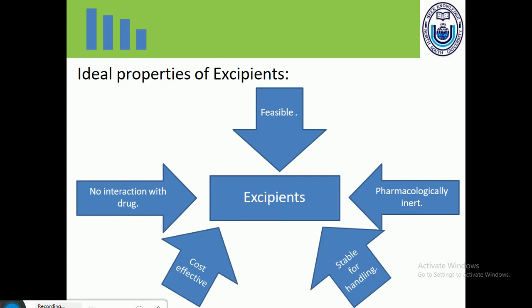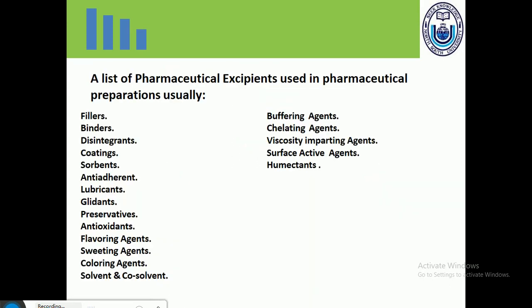Now let us look at the ideal properties of excipients. First, excipients are pharmacologically inactive substances. They must be stable for handling, cost-effective, and there should be no interaction between the drug and the excipient. They must be feasible and readily available. These are the ideal properties of excipients which, if a substance possesses, means it can be used in any type of formulation.